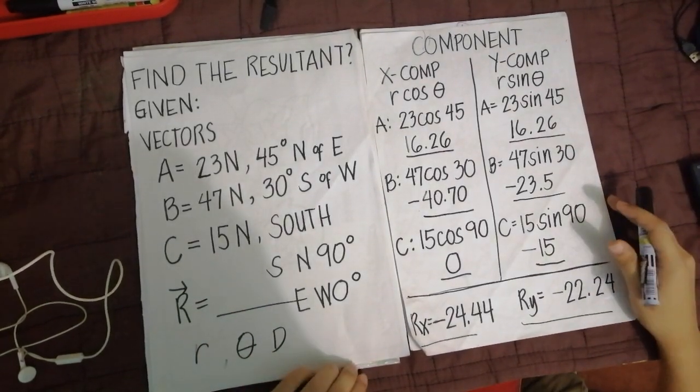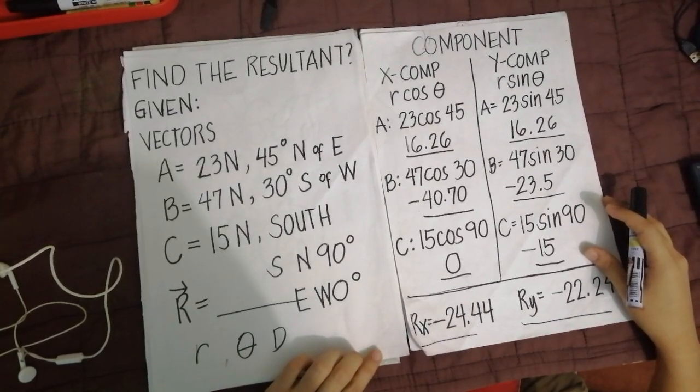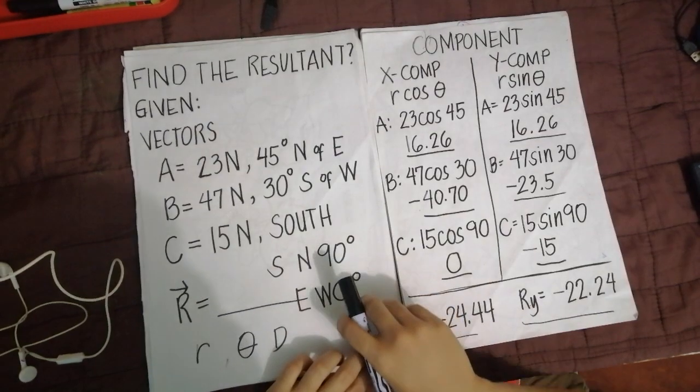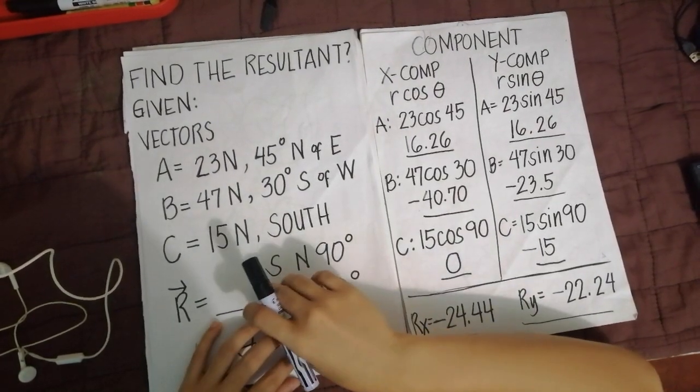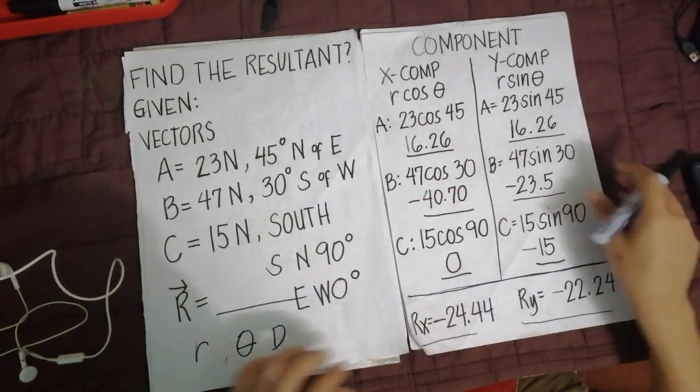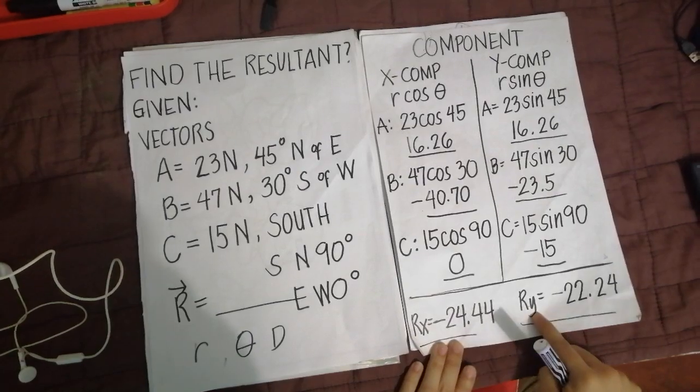Okay class, welcome back. This will be the part 2 of getting the resultant vector of our first example from our previous video. So ito pa rin given natin class, then nakuha natin kanina using the component method, the Rx and the Ry.